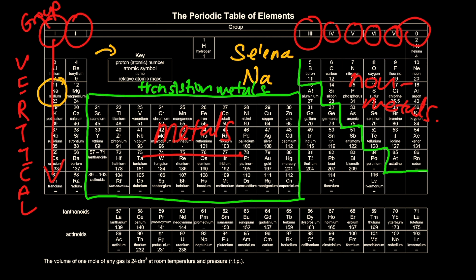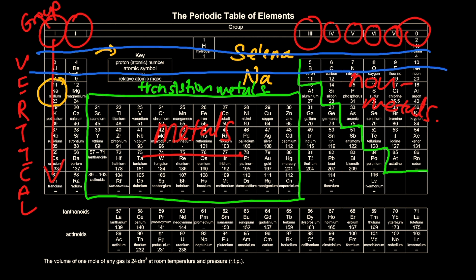Now, you also learned about the group. The last thing I want to show you is — can you see the horizontal rows? This blue colour is the first horizontal row, and the second blue is also the second horizontal row. The horizontal rows we name as period. So, how many periods are there in the periodic table? The first period is none other than hydrogen and helium. The second period is lithium, beryllium, boron, carbon, nitrogen, oxygen, fluorine, and neon.